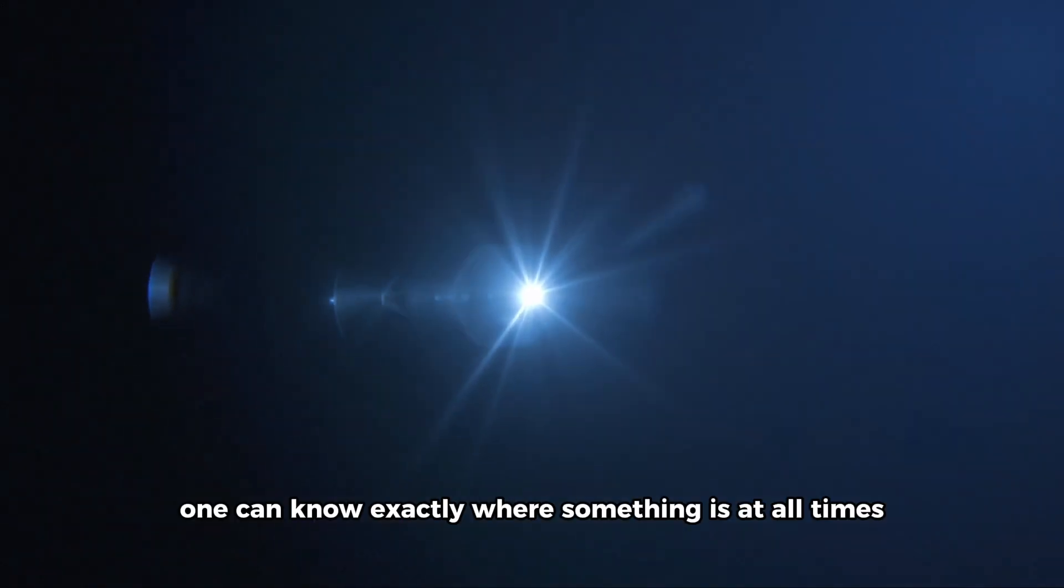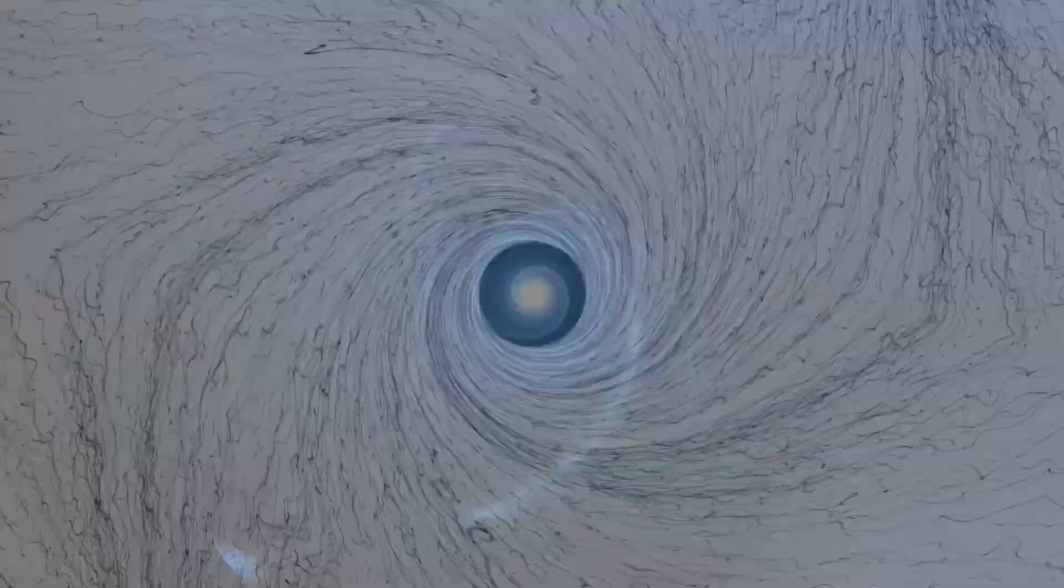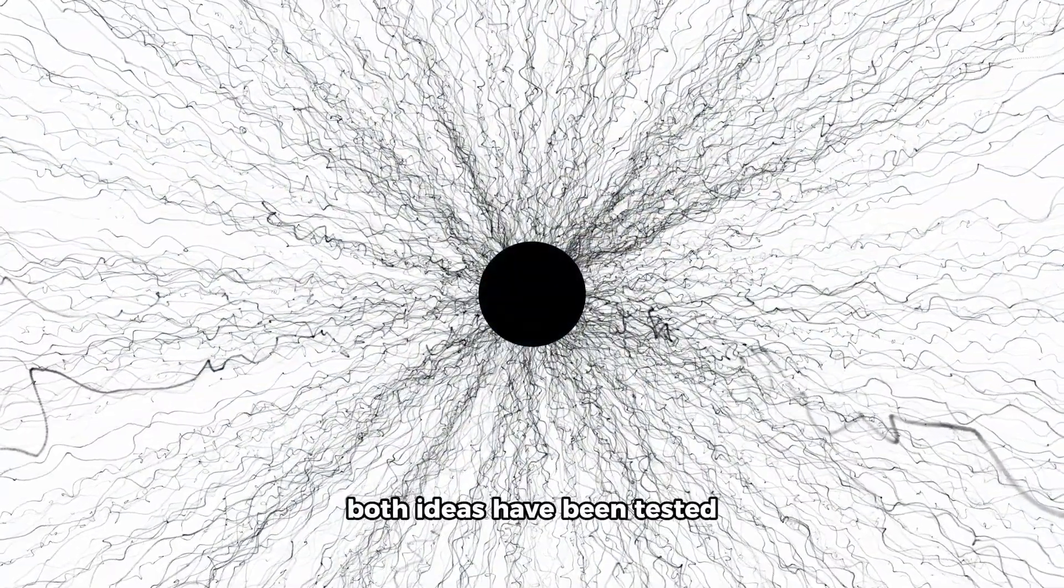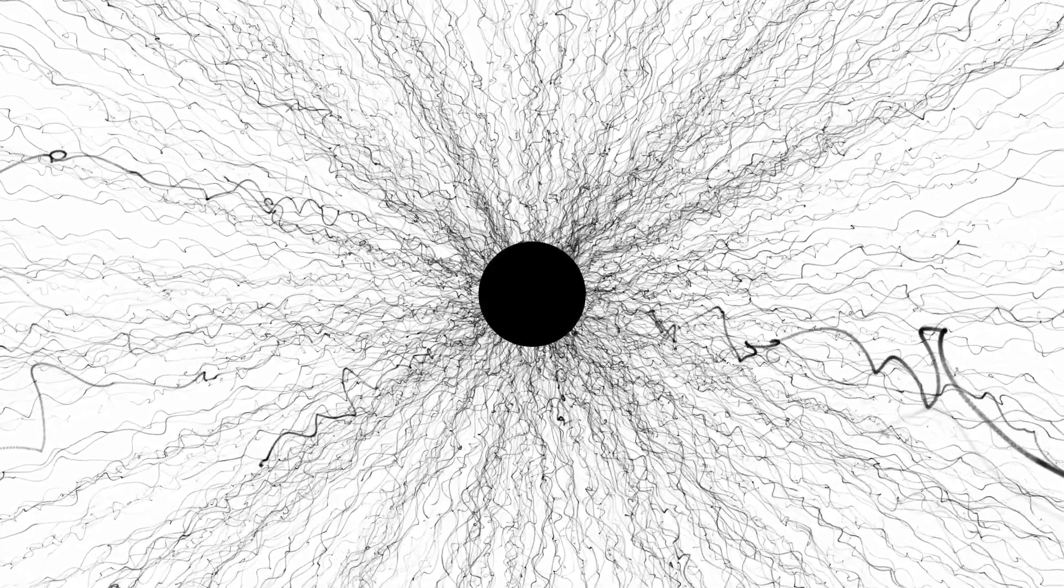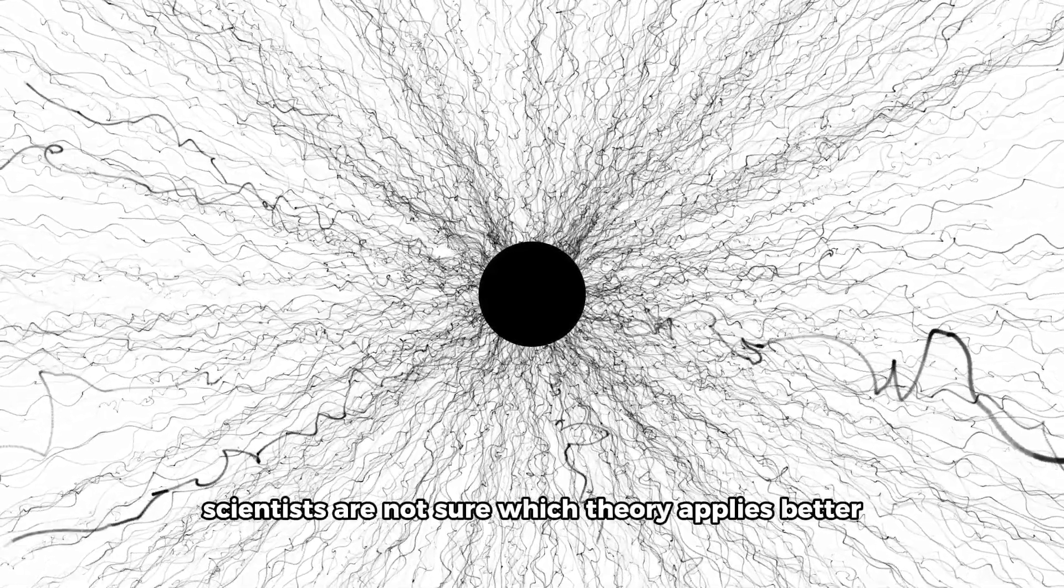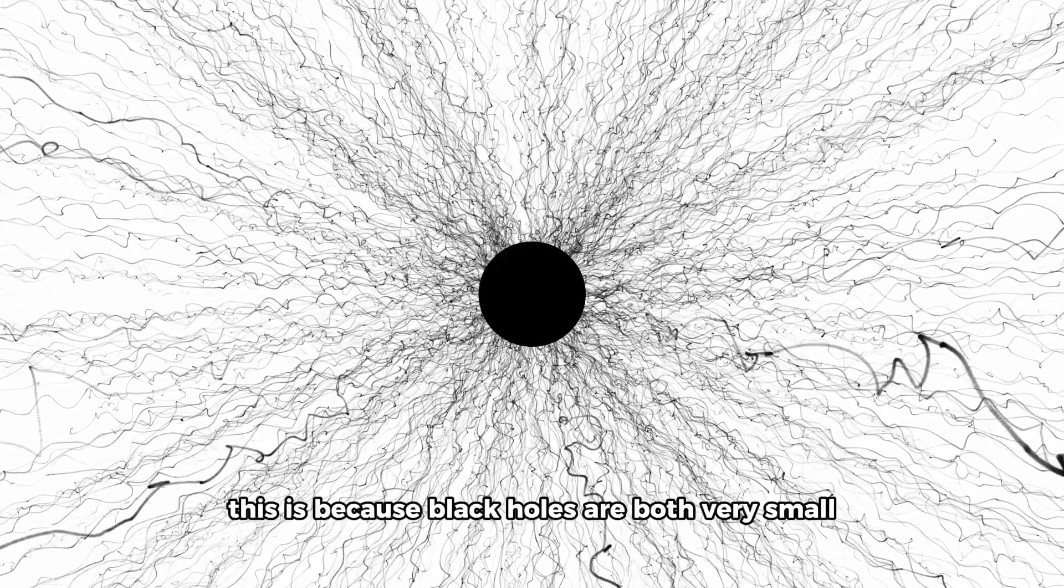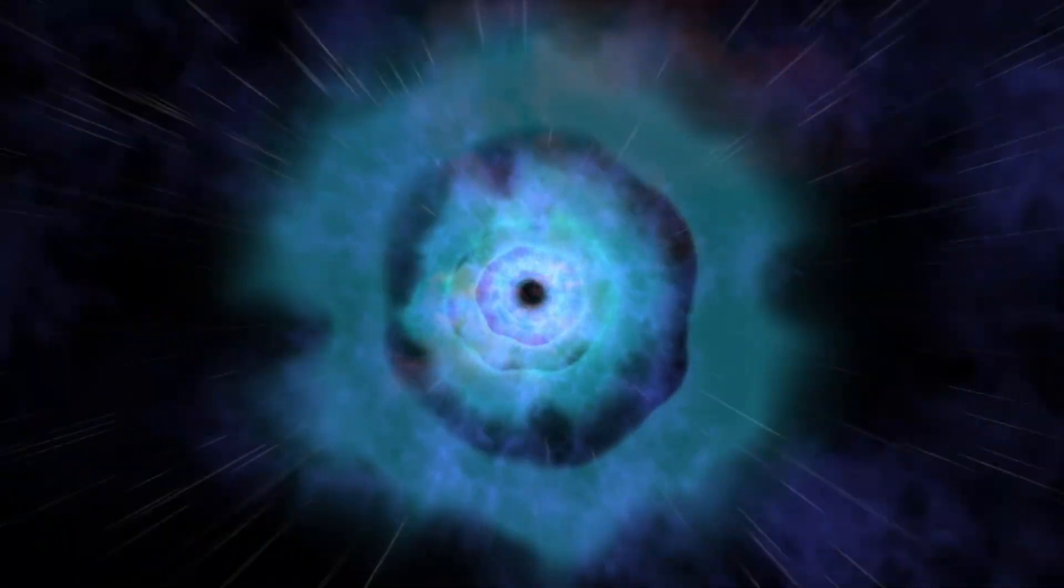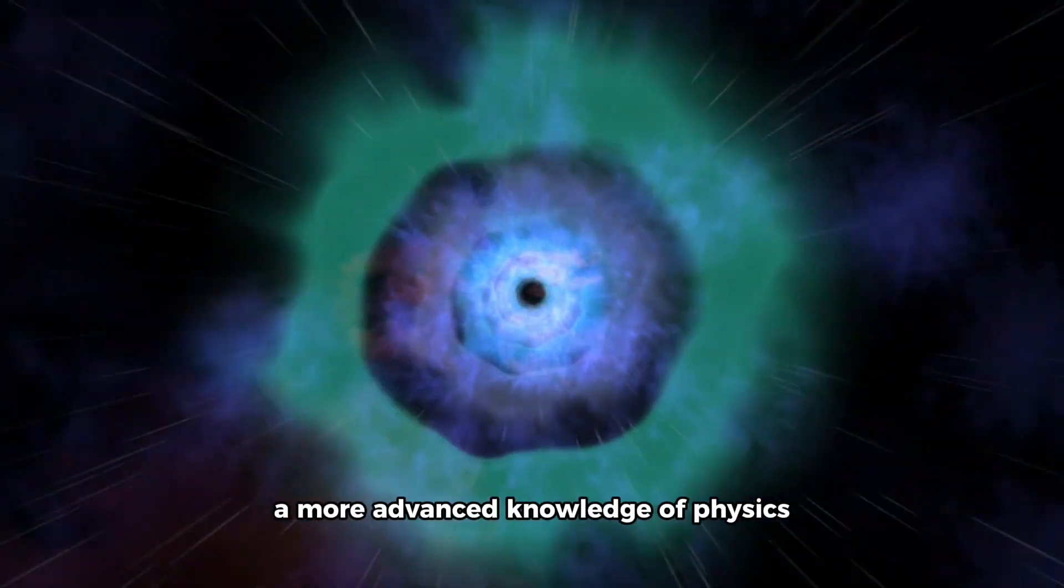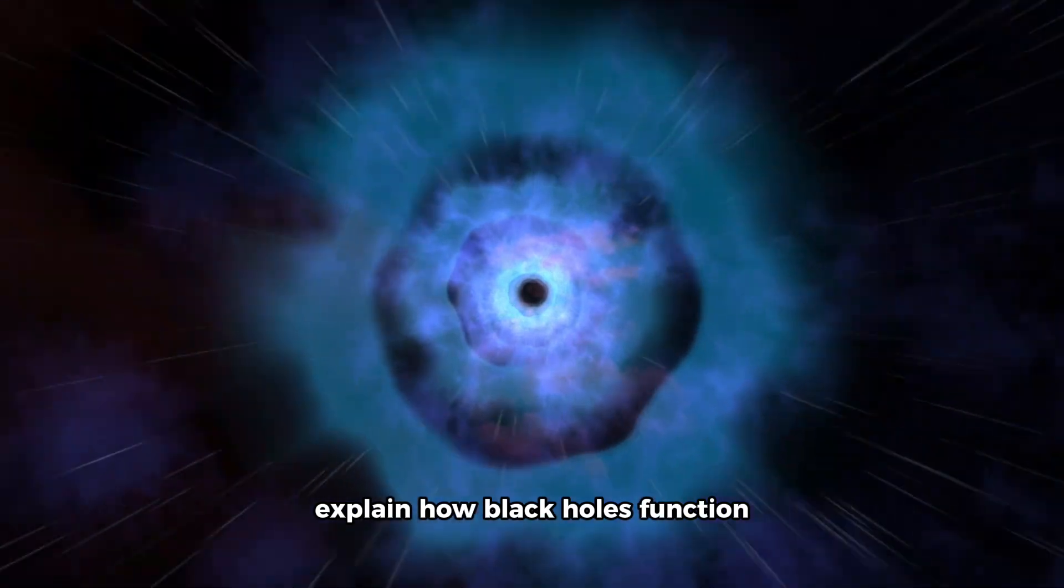General relativity states that one can know exactly where something is at all times. Both ideas have been tested, but when trying to understand black holes, scientists are not sure which theory applies better. This is because black holes are both very small and very heavy at the same time. A more advanced knowledge of physics would be needed to truly explain how black holes function.